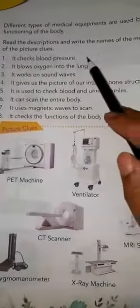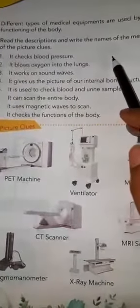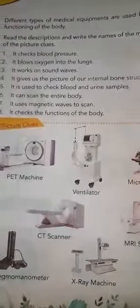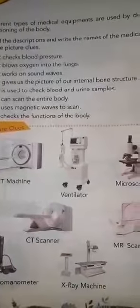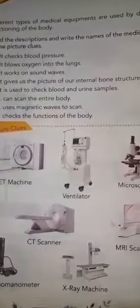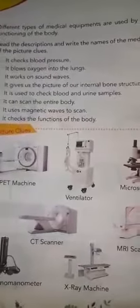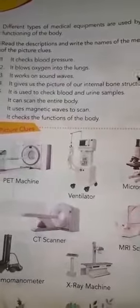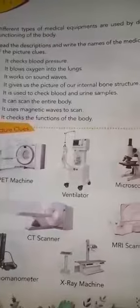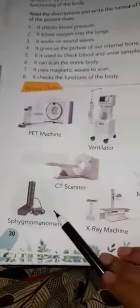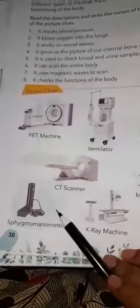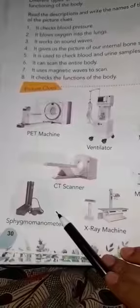The first clue: it checks the blood pressure. What is the instrument called that helps the doctor check blood pressure in human beings? This instrument is called the sphygmomanometer, and it is used for checking blood pressure.